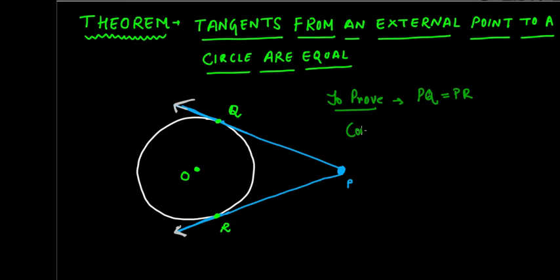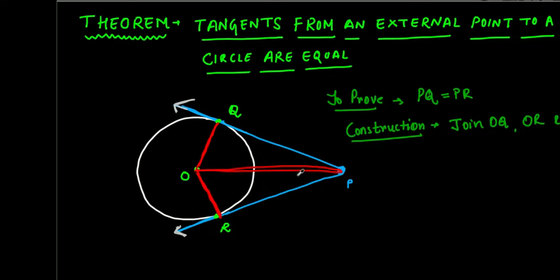For that, first we will need to do some construction. Our construction is going to be: join OQ, OR, and OP. So we're joining these three line segments - OP, OQ, and OR.